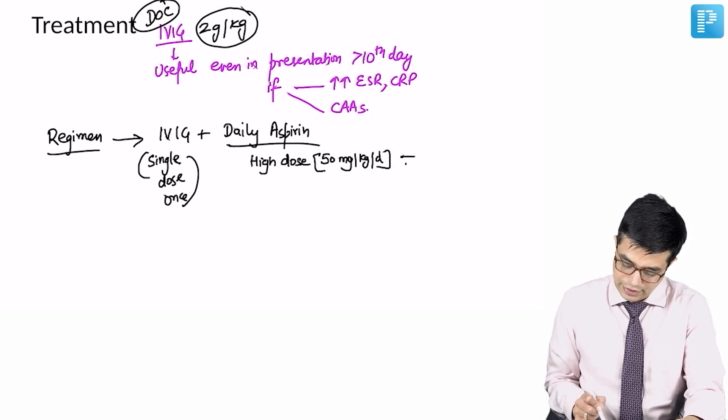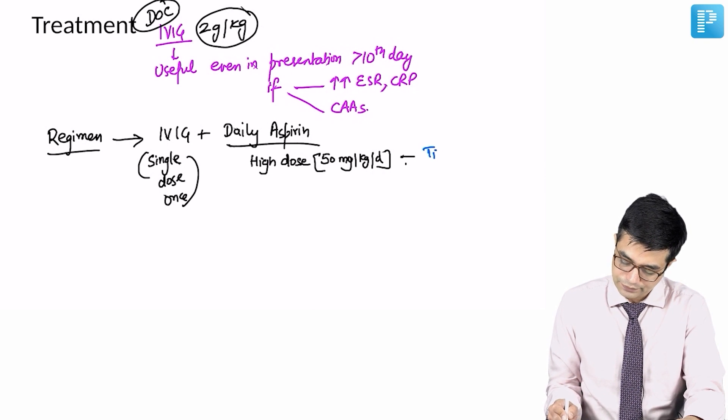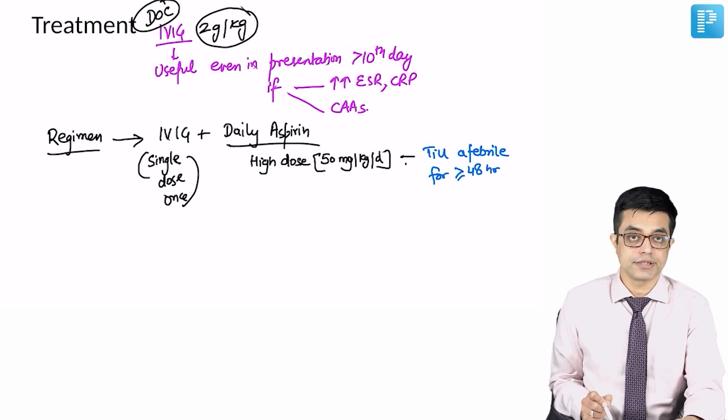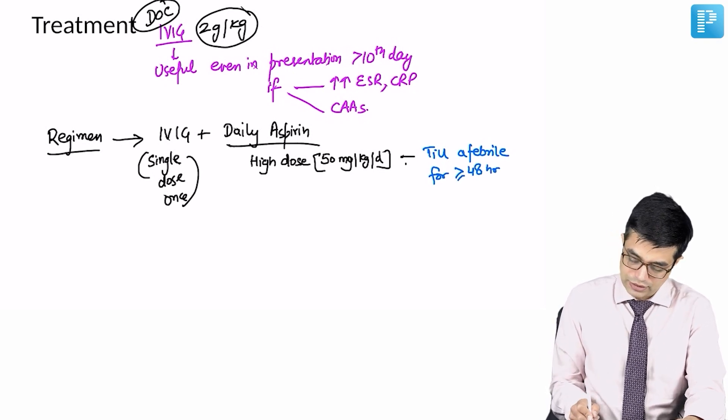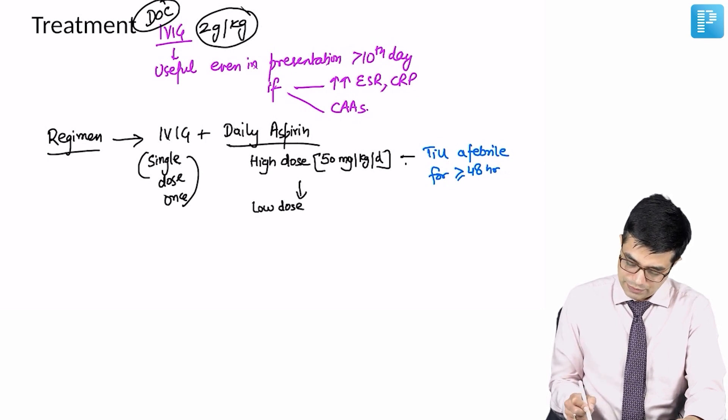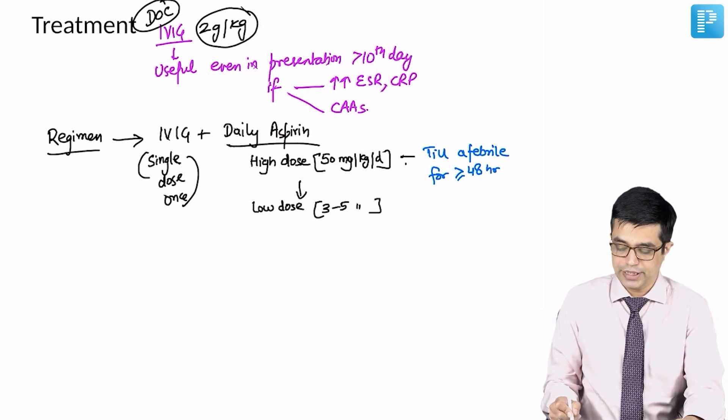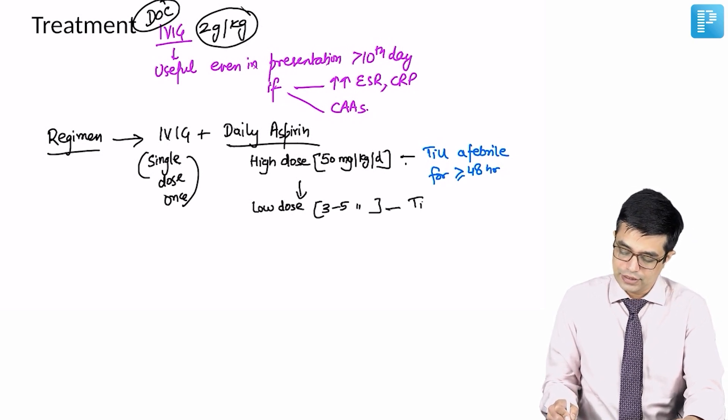It is given till the patient is afebrile for more than or equal to 48 hours. After that, you switch the high dose to low dose aspirin. Low dose aspirin will be 3 to 5 milligram per kg body weight per day and it is given till 6 to 8 weeks.